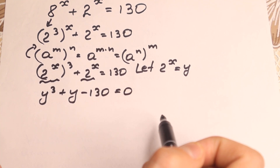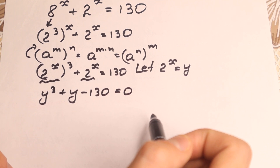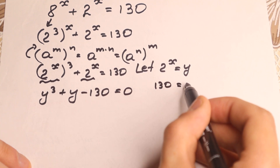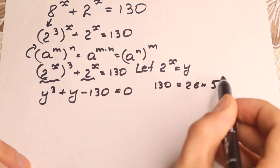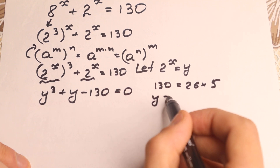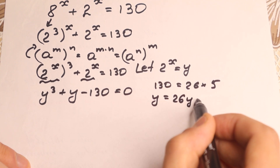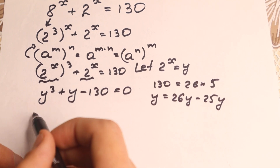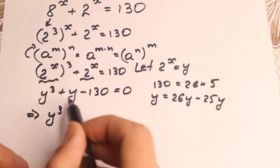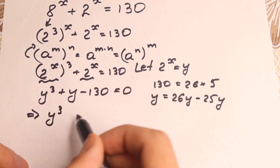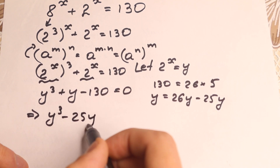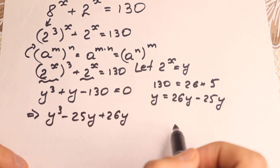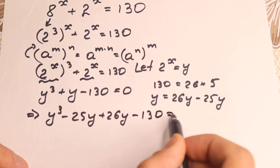We have a cubic equation. There are a lot of approaches to solve it. I'm going to show a really interesting one. Since we have 130, we can write it as 26 times 5. Moreover, we can write y as 26y minus 25y. Using this substitution, we have y cubed, writing y as 26y minus 25y: so minus 25y plus 26y, and 130 stays the same, equal to zero.